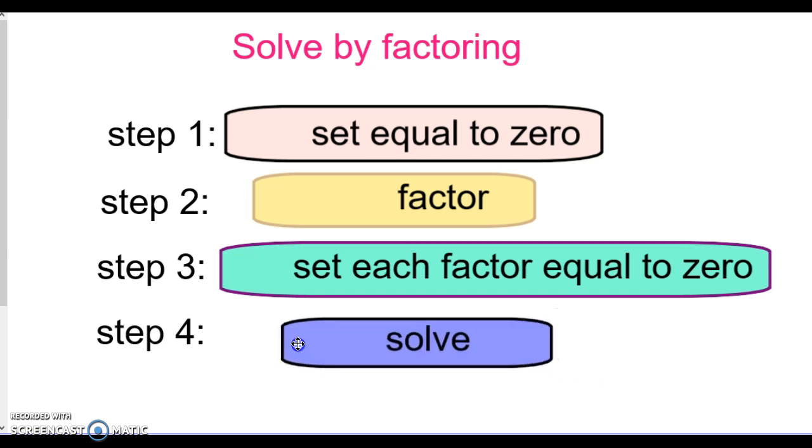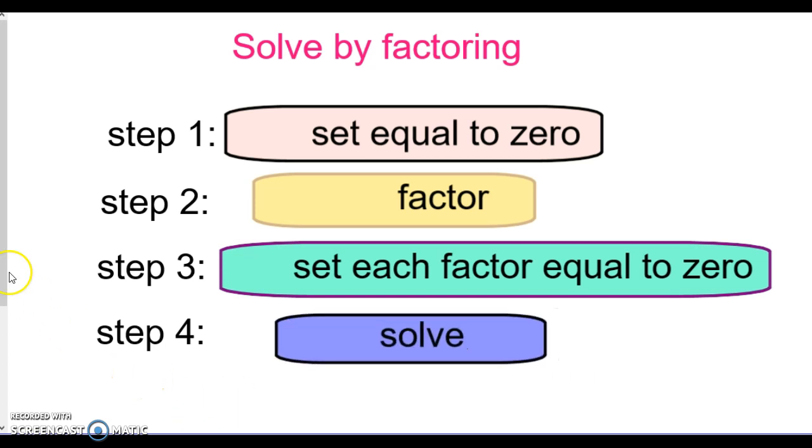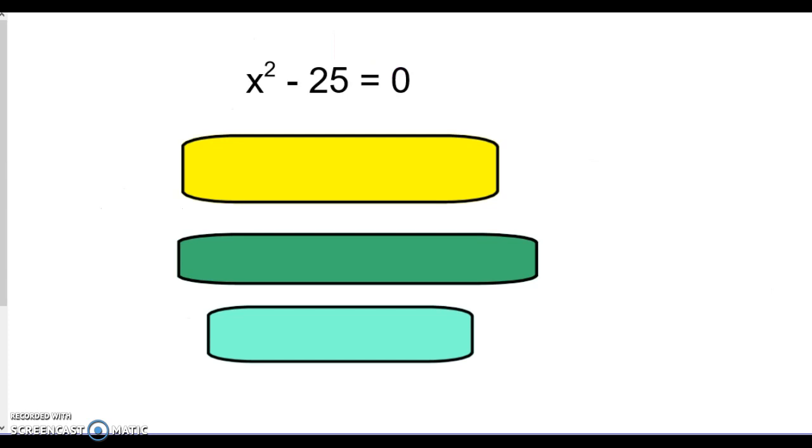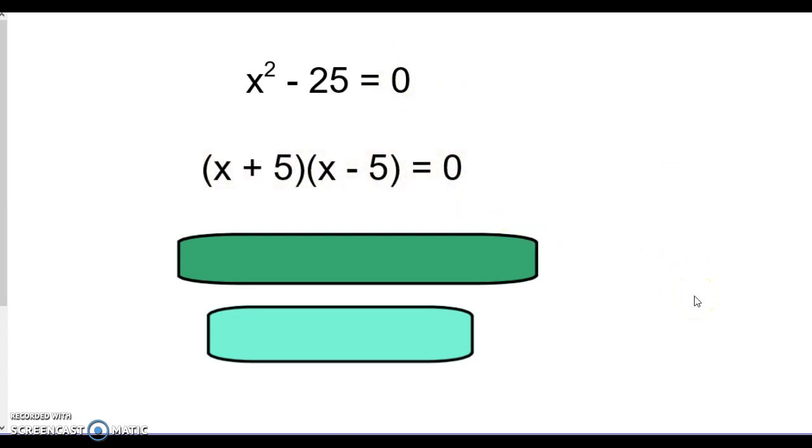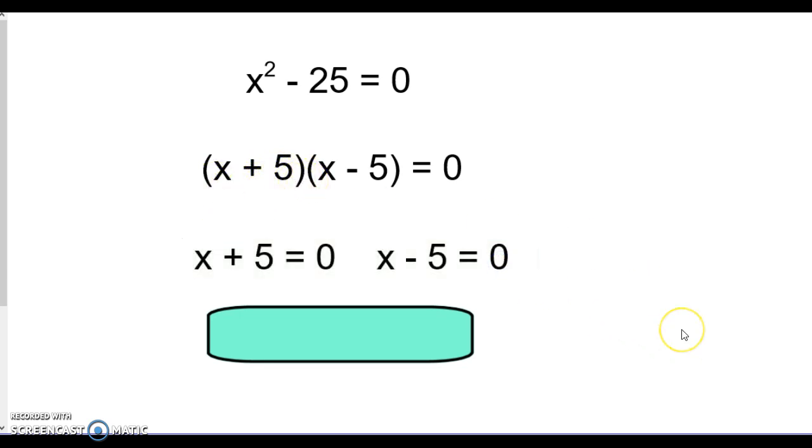All right, here's our first example. Step one is to set it equal to zero, which it already is. Step two is to factor, and that's a difference of two squares. Step three is to set each factor—each of these in the parentheses—equal to zero. Then your final step is to solve each one of those equations, and you get answers of negative five and five.